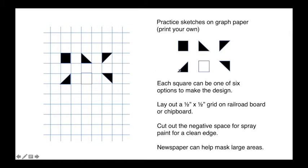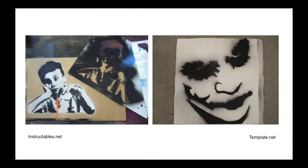Designs must be composites of one of these six possibilities for each single square. Test some designs on graph paper using this limited constraint or limited menu. When you have a design idea, lay out a half-inch by half-inch grid on railroad board or chipboard. Cut out the negative space for spray paint for a clean edge — you can use newspaper for larger mask areas. Laying out that grid and starting to cut out that shape for spray paint will become a way of masking, creating what we might call a template. In spray art and urban art, templates are often used to repeat a particular spray pattern.